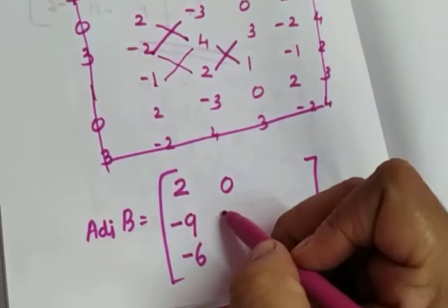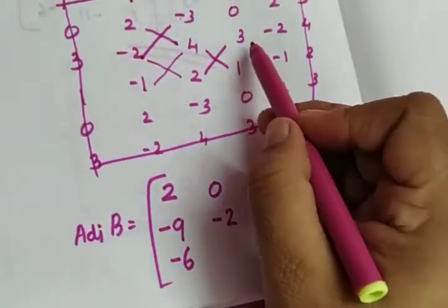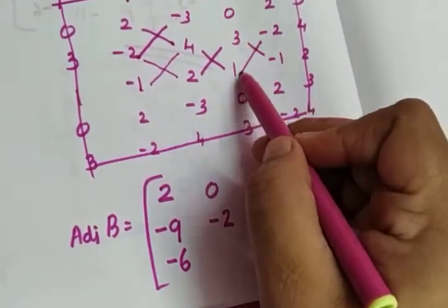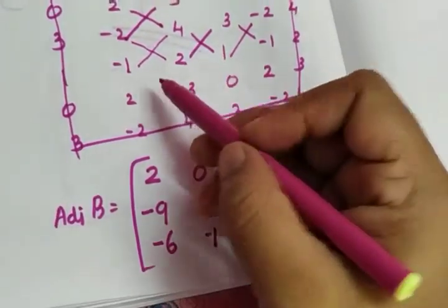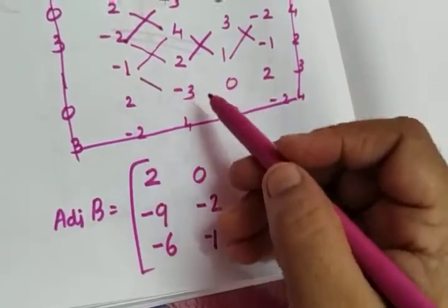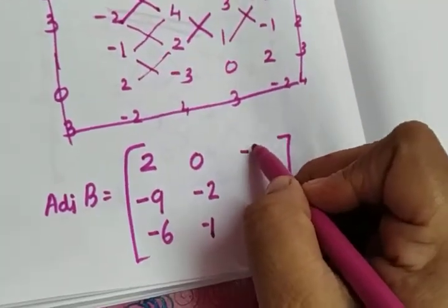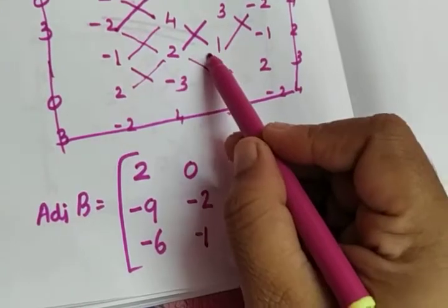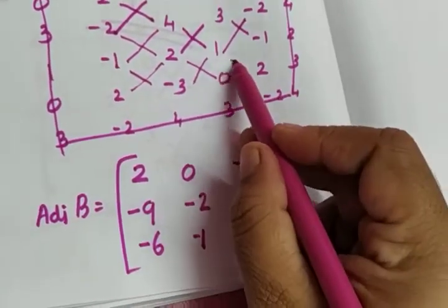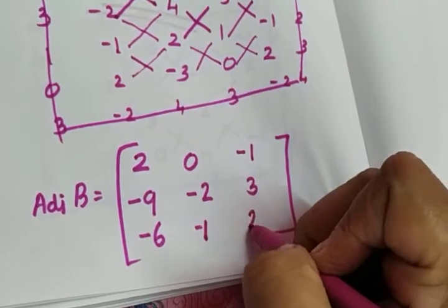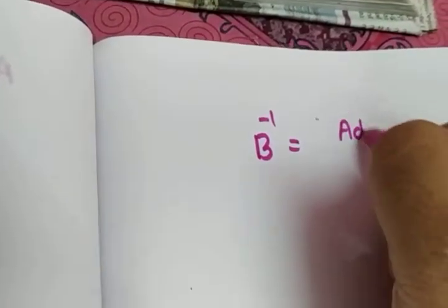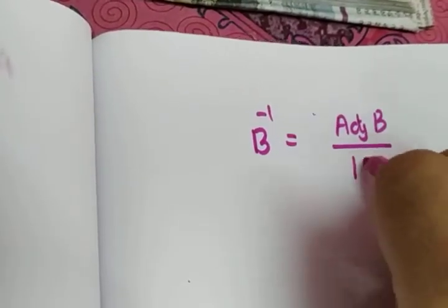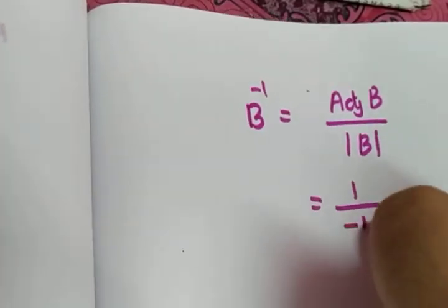Continuing: 4 - 6 = -2; next element: (-2) - (-3) = -2 + 3 = -1 (i.e., -3 + 2 = -1). Then: (-3)×(-1) - (-4) = 3 - 4 = -1. Next: 0 + 3 = 3. And: 2×(-2) - (-3)×(0) = -2 - (-2) = ... gives -1. So the adjoint matrix is: [2, 0, -1 / -9, -2, 3 / -6, -1, -2].